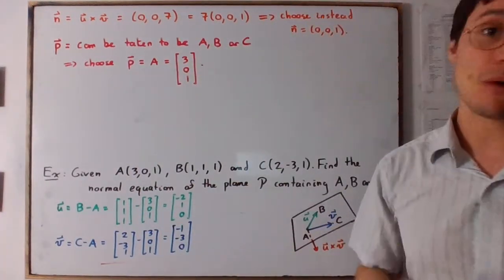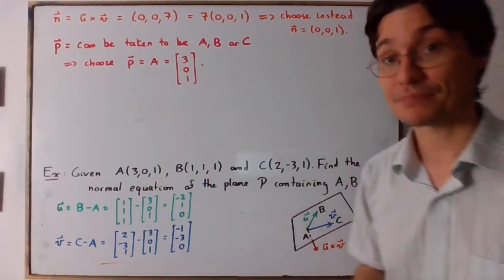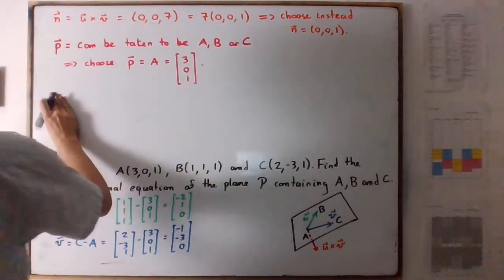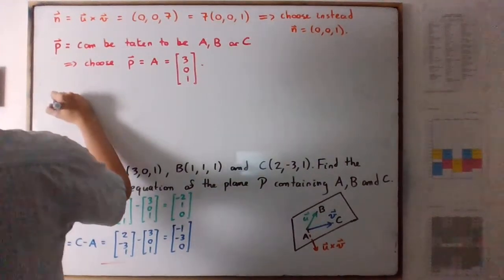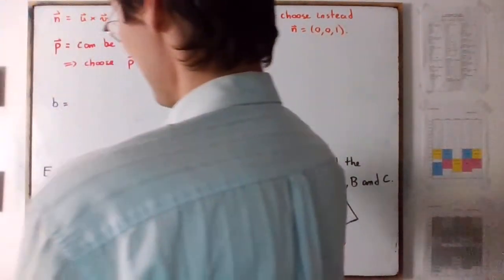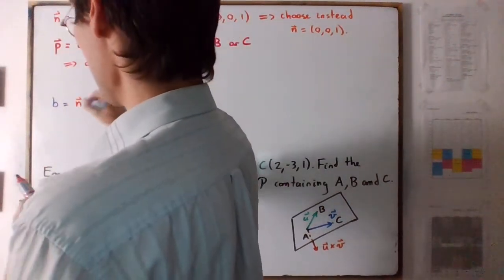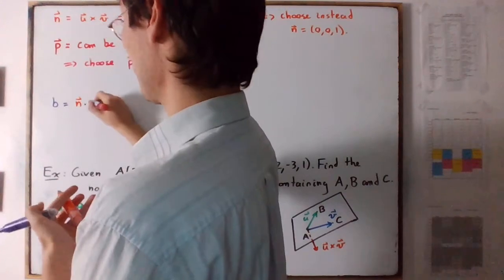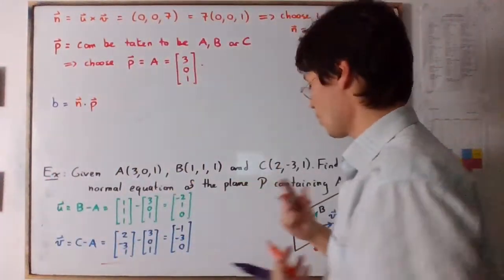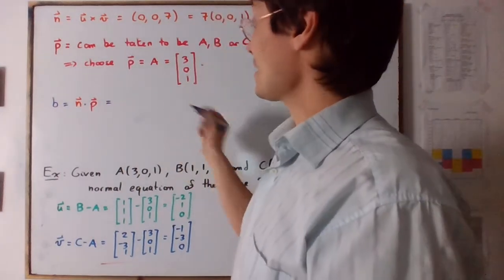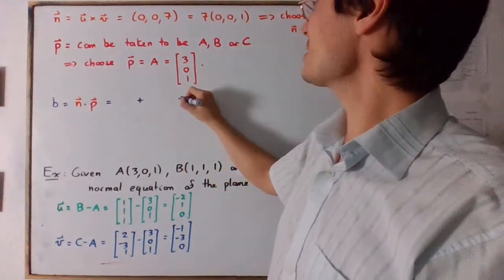So what do we have left to do? Well, we need to compute B. So we know that it's not a vector, it's a constant. We know that B is equal to the dot product of the normal vector with the position vector that we engineered. We chose one of the points. So let's go.